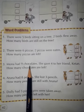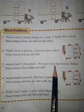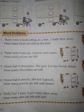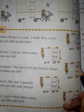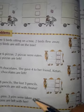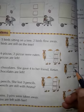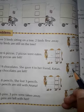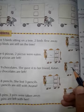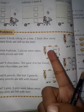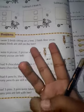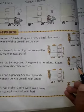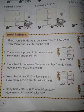Next question. Mona had nine chocolates. She gave four to her friend Chetan. How many chocolates are left? Mona had nine chocolates, so you write here nine. And she gave four to her friend, so you write here four. Now you subtract — nine minus four. You start counting after four till nine: five, six, seven, eight and nine. How many fingers are open here? Five fingers. So you write here five.